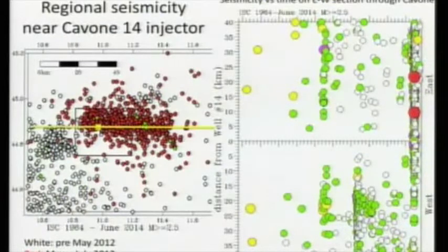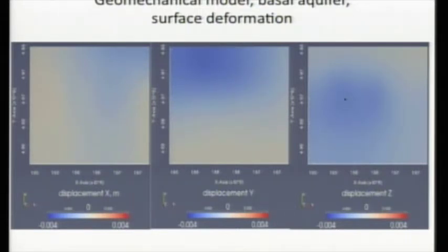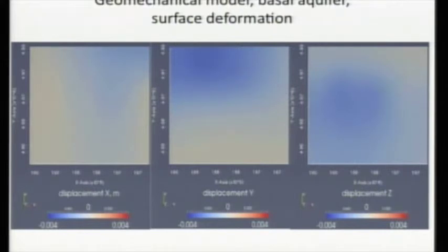Another thing we get from this model is surface deformation, which we can use to calibrate the model. For the Cavoni field, because injection and production were so well balanced, the surface deformation is very small — we show the three-dimensional surface deformation contoured for east-west, north-south, and vertical displacement. The predicted subsidence over three decades is just four millimeters, so one millimeter per decade is beyond the ability of geodesy to detect. In other cases with larger pressure variations or less balanced production and injection, surface deformation could be an important observable.